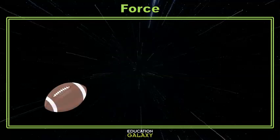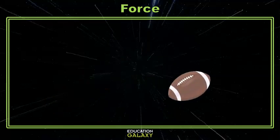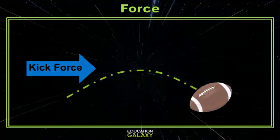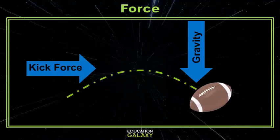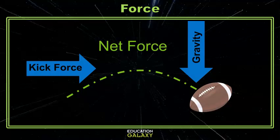Let's look back at our football from earlier. When you kick it, you apply force in one direction. But gravity also has an effect on that football by pulling it back down to the ground. Together, these two forces are called net force. It results in the football's ultimate distance and speed as it travels.